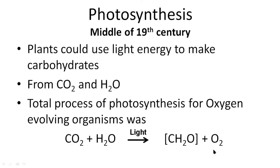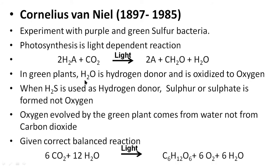Van Neel's most important contribution was clarifying the source of oxygen during photosynthesis. Scientists previously believed oxygen was released from carbon dioxide, but van Neel's experiment demonstrated that oxygen is derived from water through oxidation of water. So photosynthesis in higher plants — where water is the hydrogen donor and oxygen is released — is called oxygenic photosynthesis, while in bacteria where hydrogen sulfide is the donor and no oxygen is released, it is called anoxygenic photosynthesis.